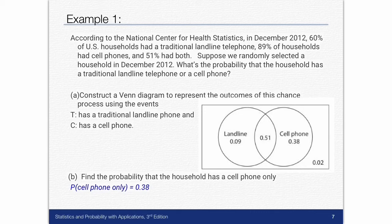Part A: construct a Venn diagram to represent the outcomes of this chance process using these events. T has a traditional landline and C has a cell phone. So we have two circles, we've labeled our two circles, and then we take our information from the word stem of the problem and figure it out.